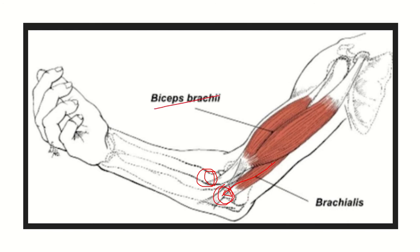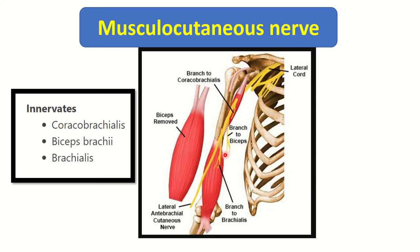These two important muscles are responsible for flexion of the forearm, meaning flexion at the elbow joint level. We need to find the nerve supplying the biceps brachii and brachialis. The biceps has two tendons — the long head from the supraglenoid tubercle and the short head from the coracoid process — and it attaches into the radius.